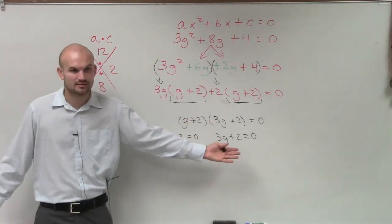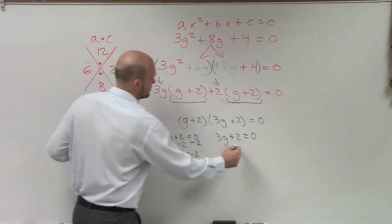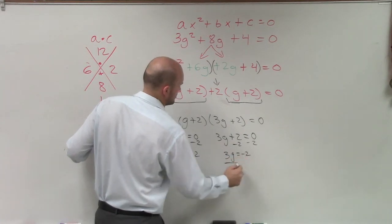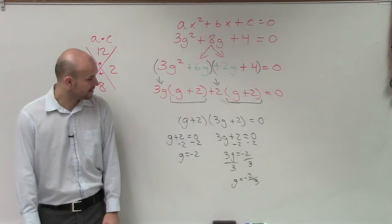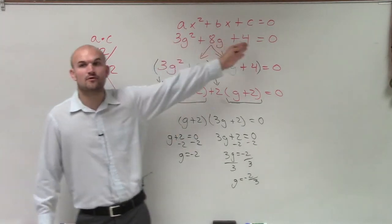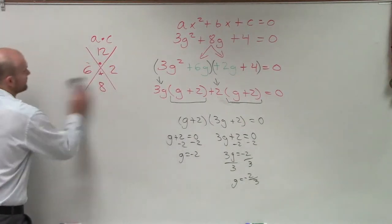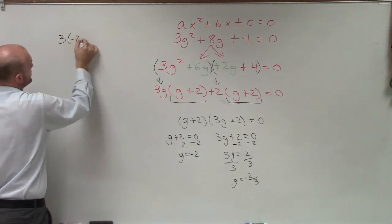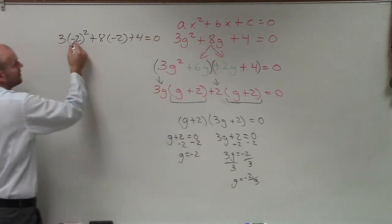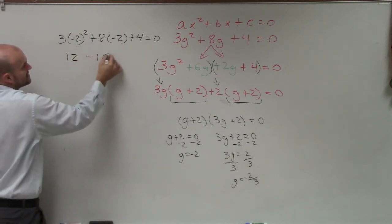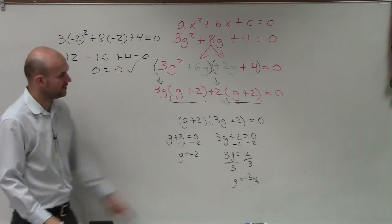Now can we solve these like algebra 1? Yes — so you just solve for g, and those are your two solutions. You can plug them in: if you plug those two solutions in for g, the left side equals 0. For example, if I plug in negative 2, 3 times 4 is 12, 8 times negative 2 is negative 16, plus 4 equals 0. 12 minus 16 is negative 4, negative 4 plus 4 is 0. It's true! And you can do the exact same thing for negative 2 thirds.